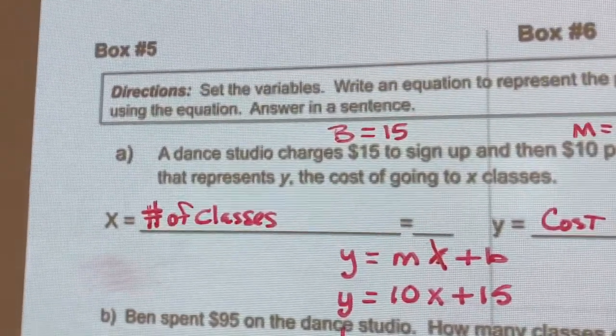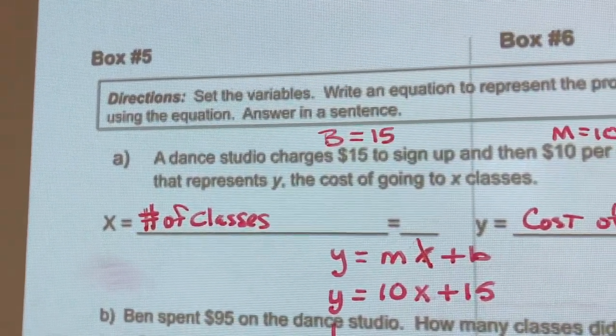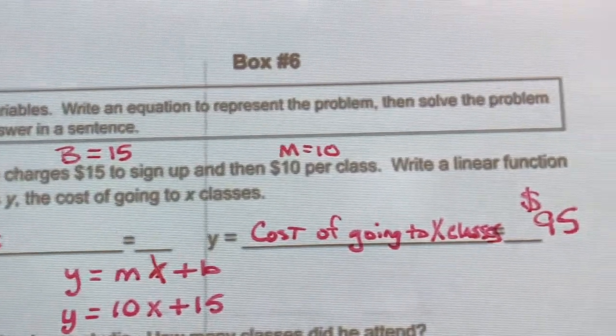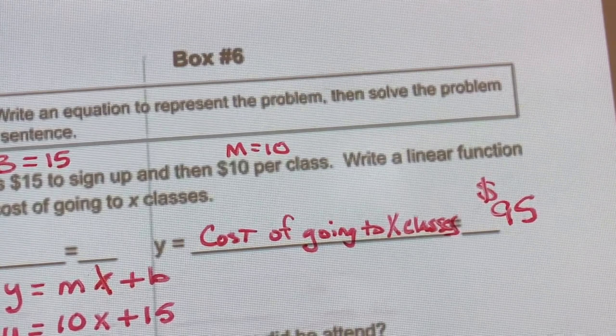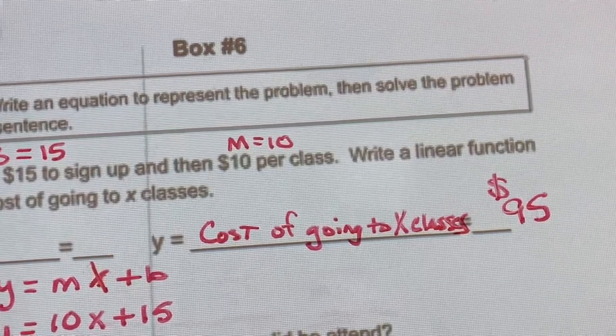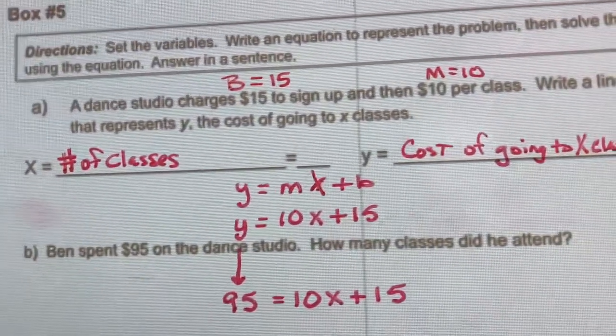So what did you call x? X is the number of classes. And y is the cost of going to x classes, which we found out down here is $95. Okay, good.